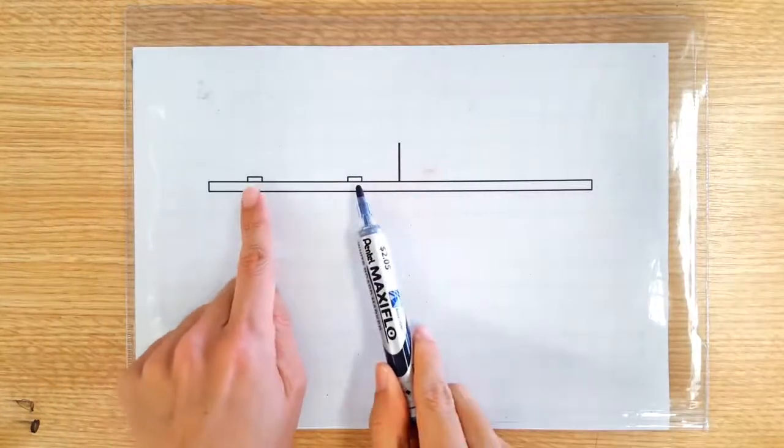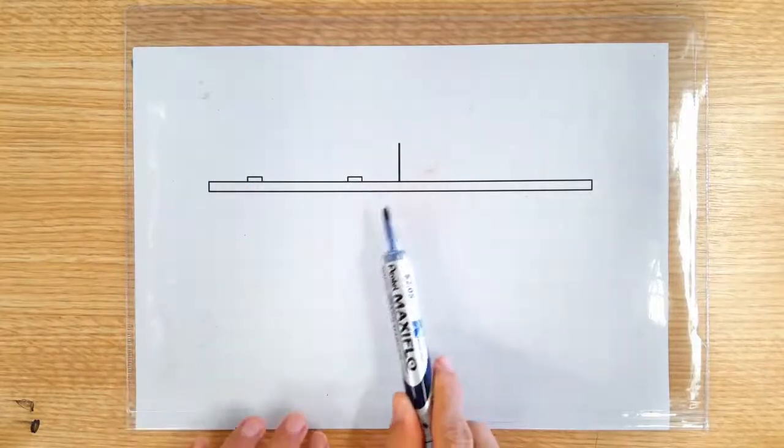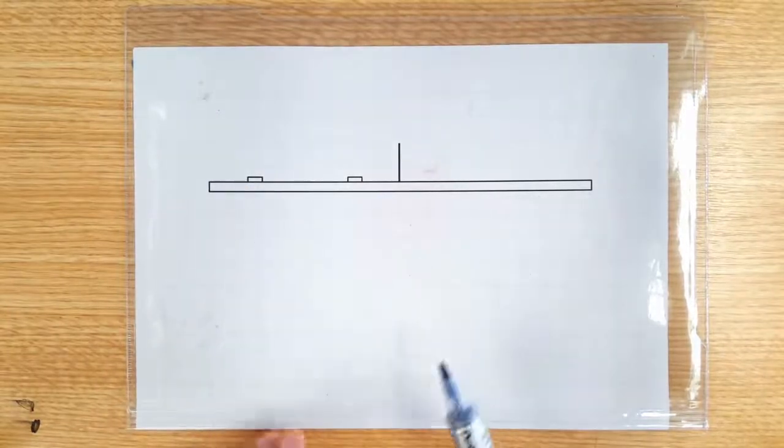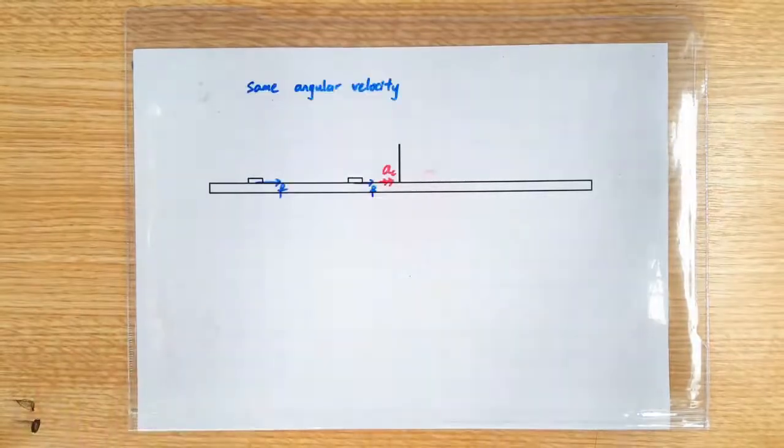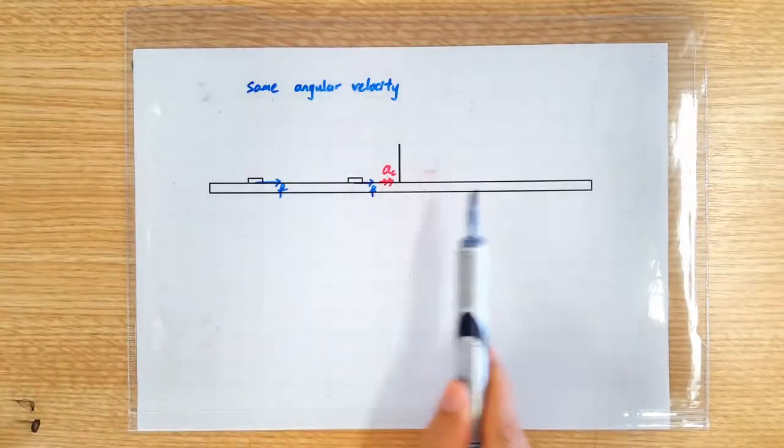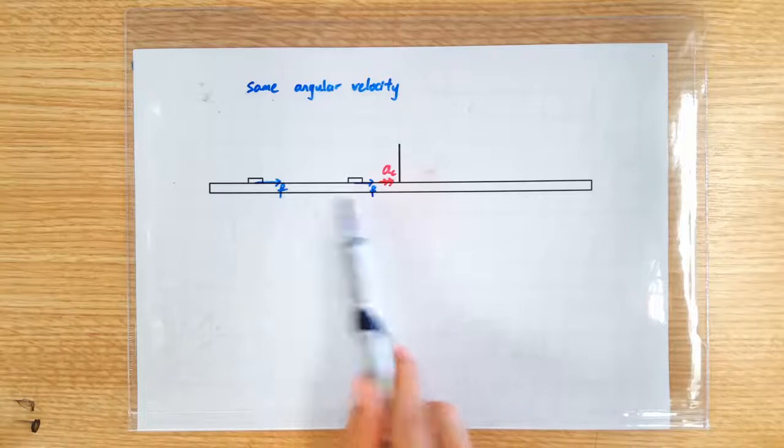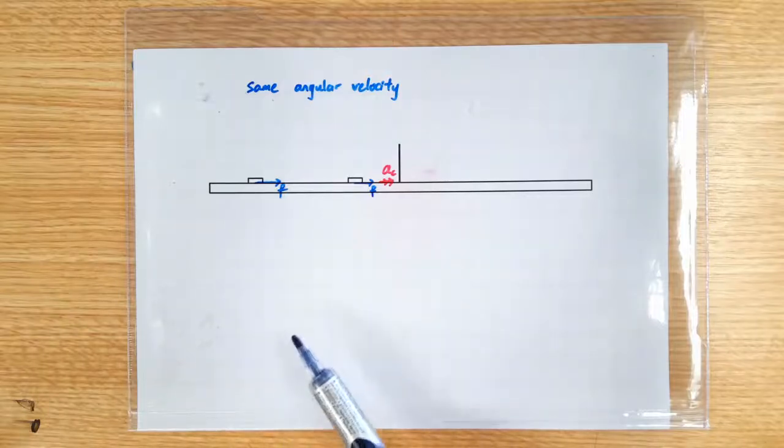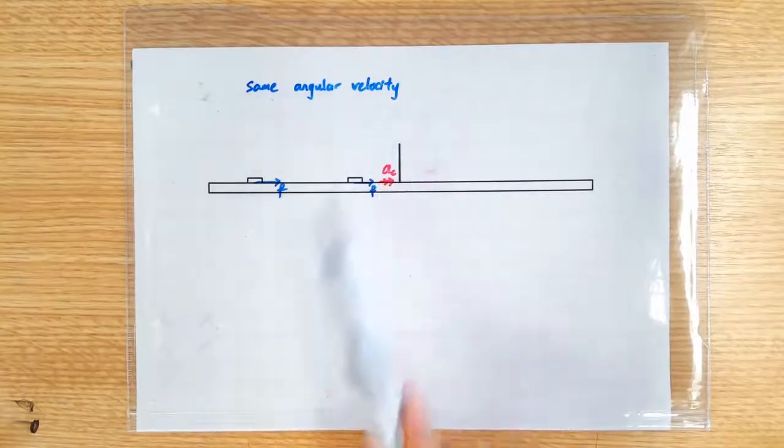Now let's talk about two identical objects resting on a spinning disc. If one of them slips, which one would it be? Now on the spinning disc, these two objects do not have the same tangential speed, but they have the same angular velocity, omega.